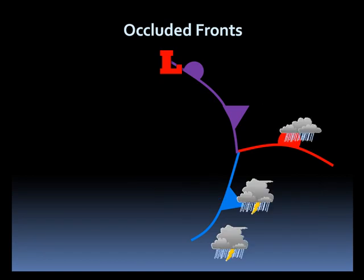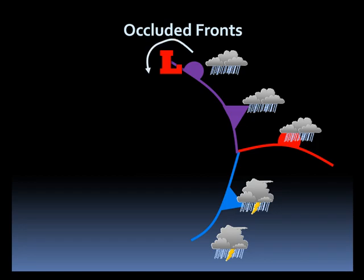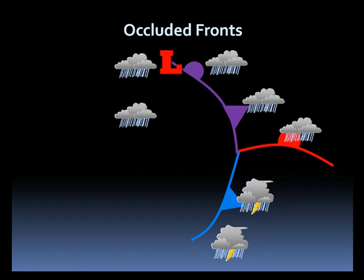Also, due to the air being wrapped counterclockwise around the low, the cloud shield will usually extend well west and southwest to the low center. Some areas of precipitation will also be possible.